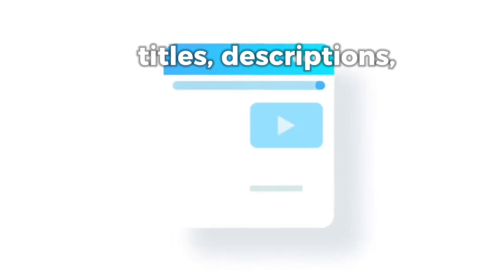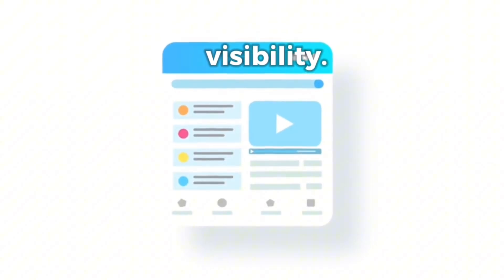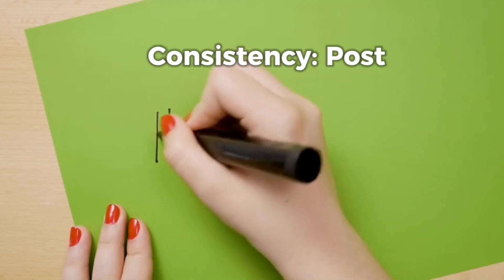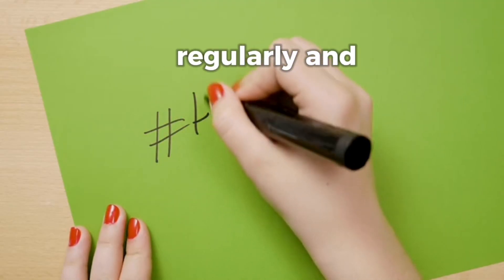SEO optimization: Use keywords in your video titles, descriptions, and tags to improve visibility. Research trending topics and use relevant hashtags.